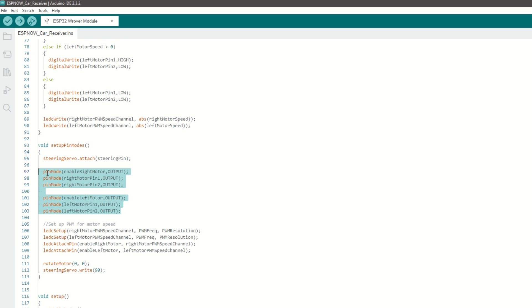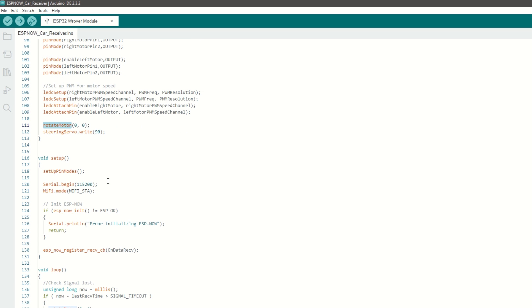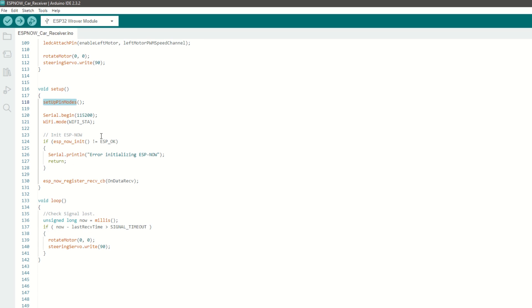Set the motor pins as output. Also set the PWM channel for speed control. Initially stop all the motors. Also set the servo initial position to center. Inside setup function we will call setup pin mode function.